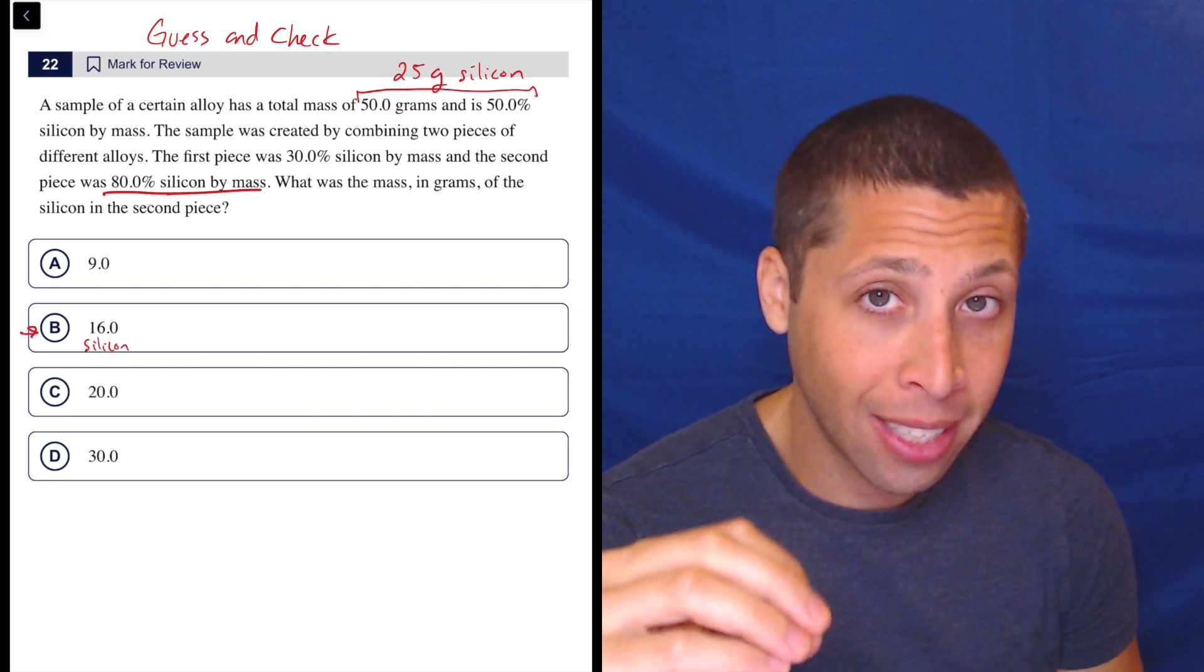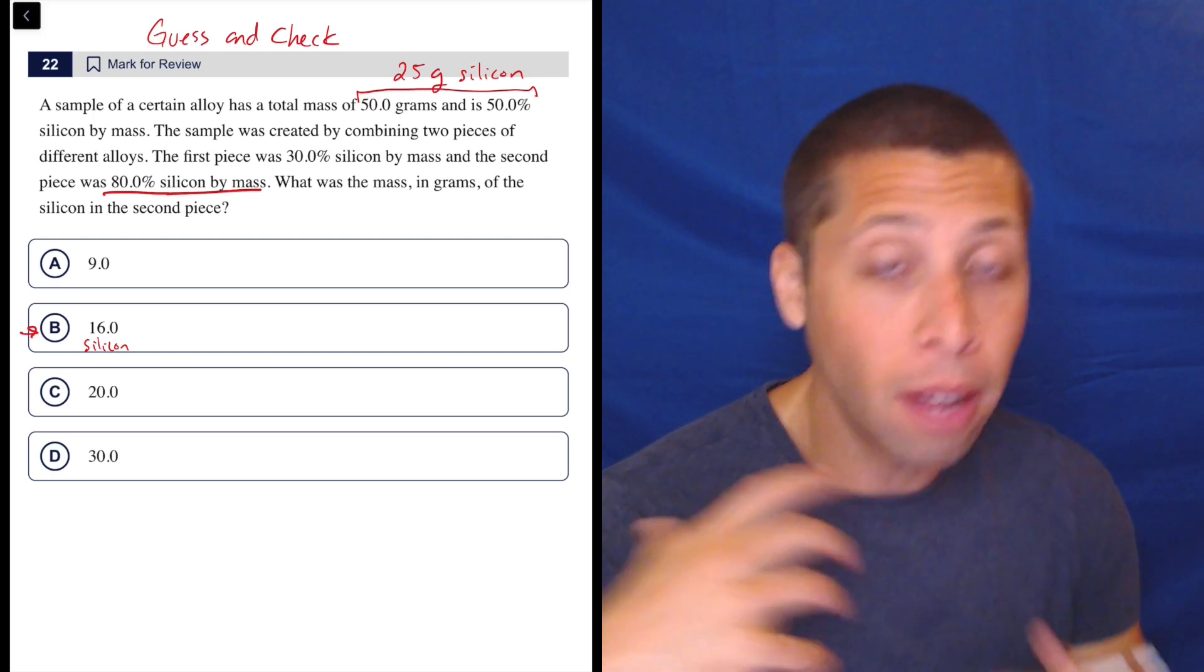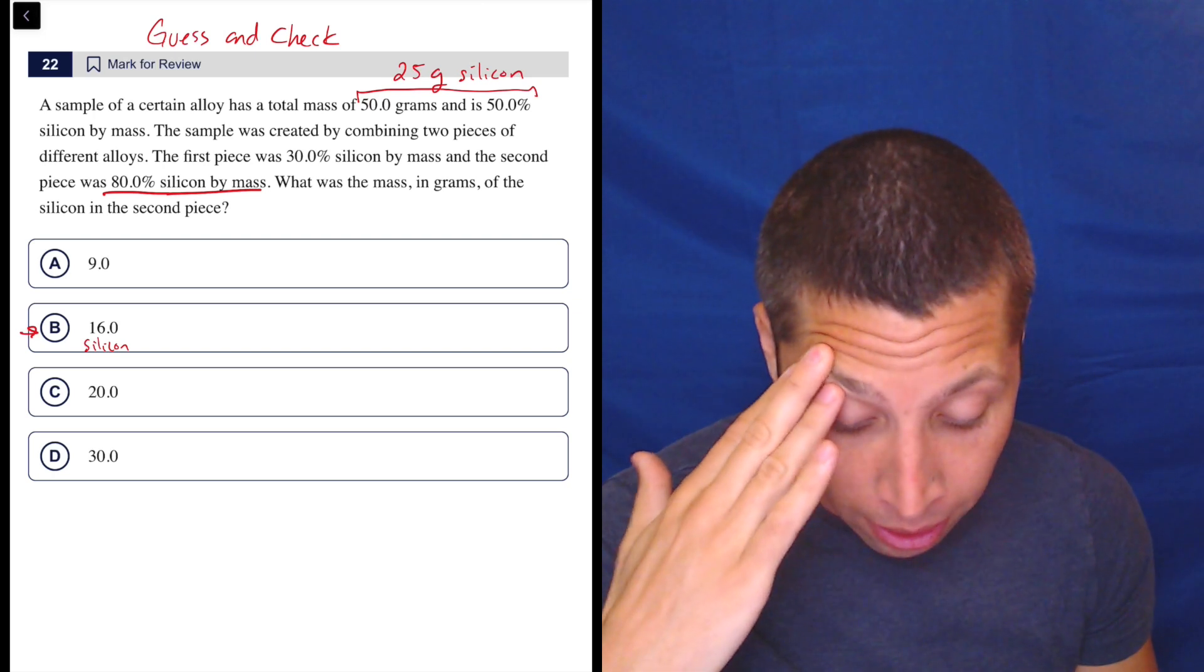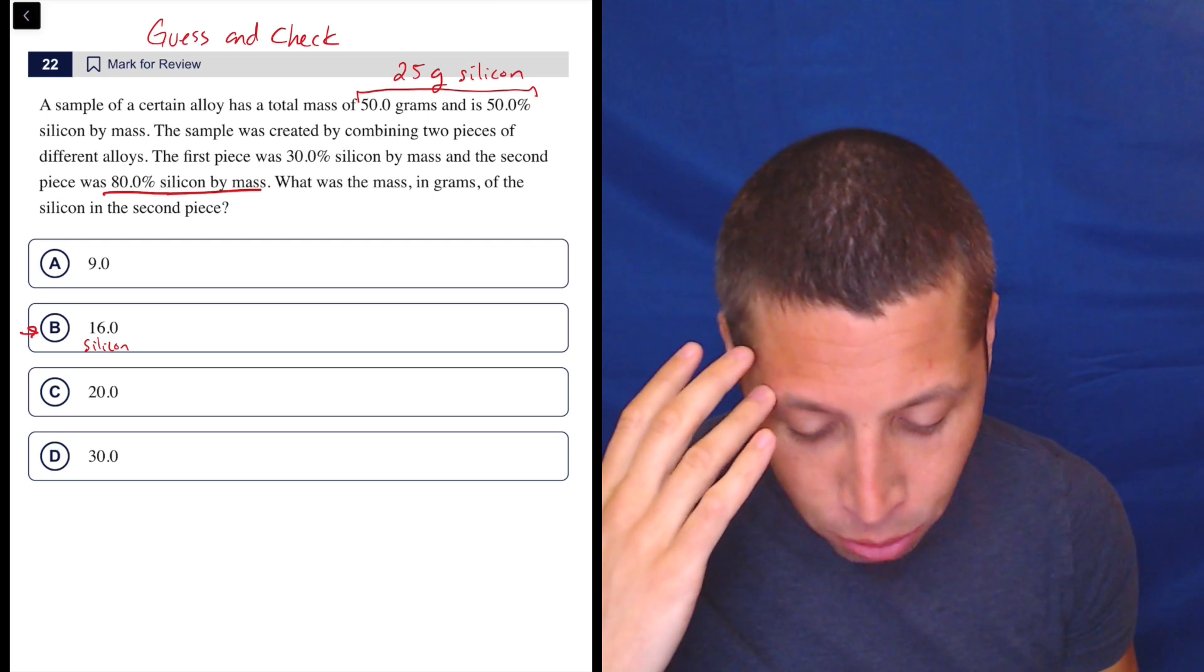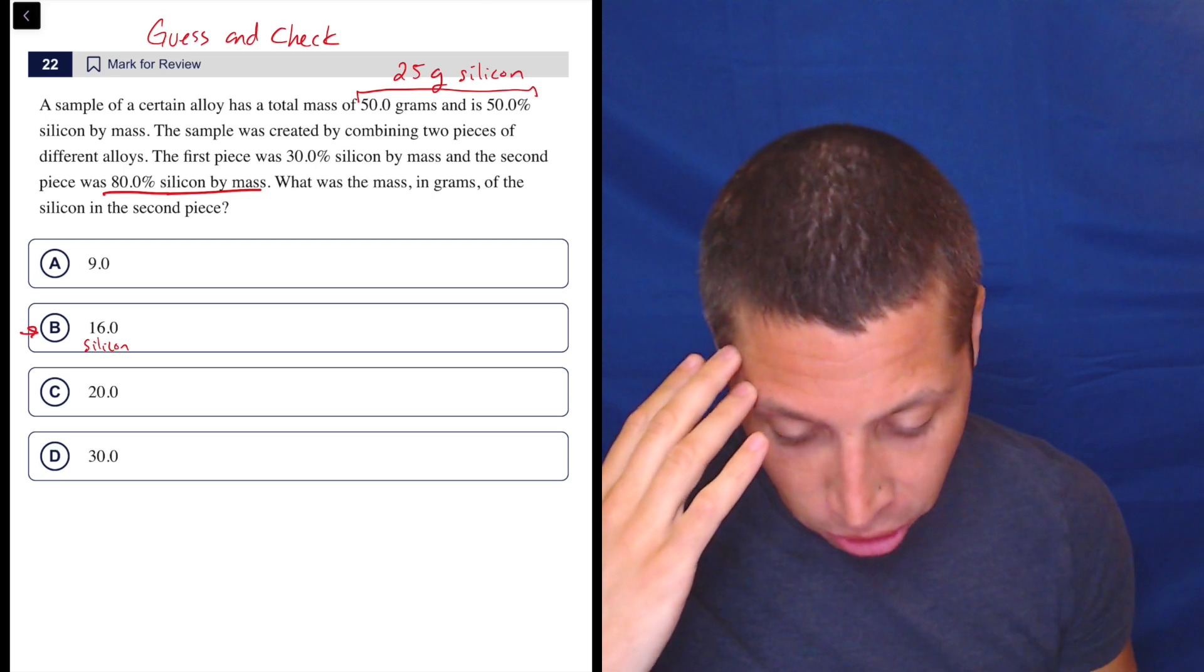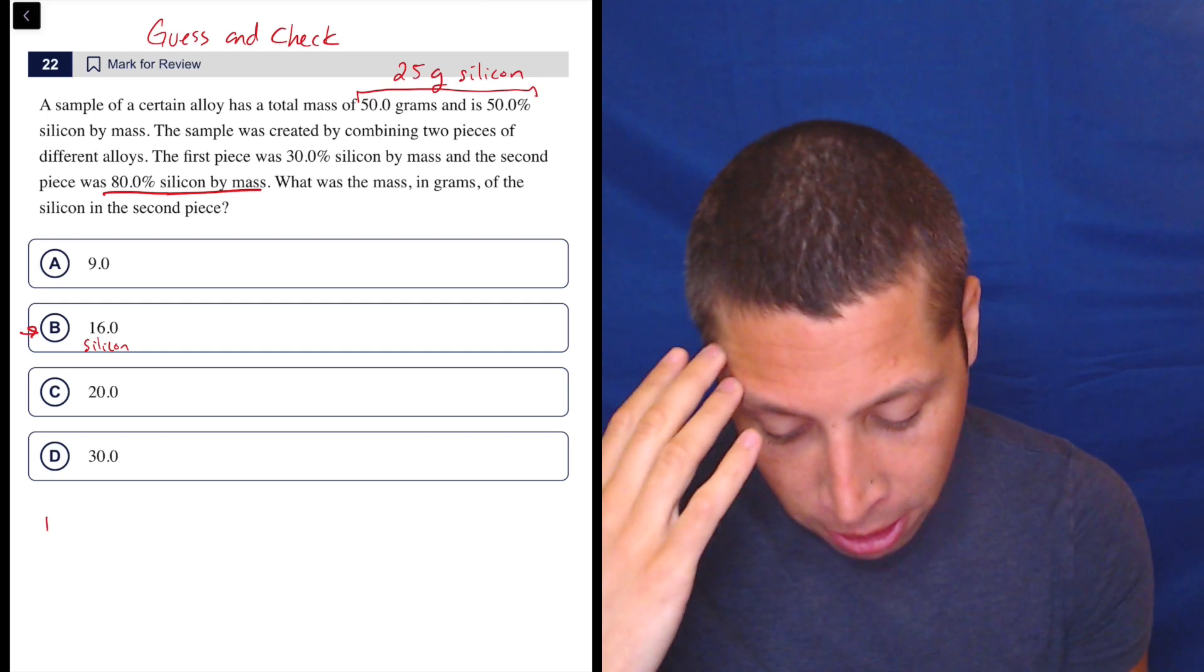So it's 80% silicon by mass, meaning that that 16 is 80% of some bigger number. Well, let's see here. We could figure that out using the open formula.